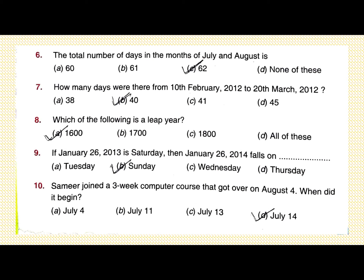Question number 8: which of the following is a leap year? All options are centuries. In the case of centuries, a year divisible by 400 is a leap year. That's why 1600 is a leap year.